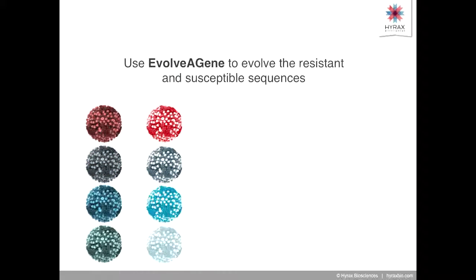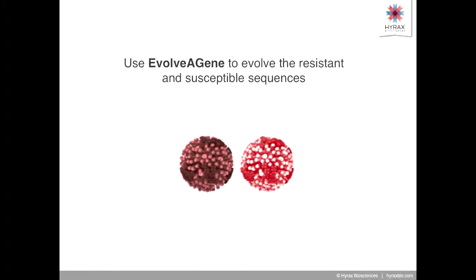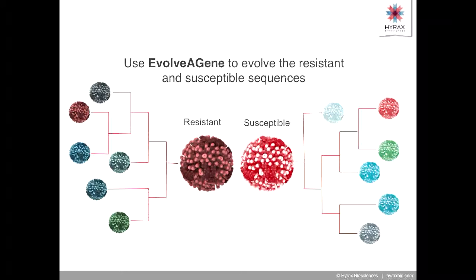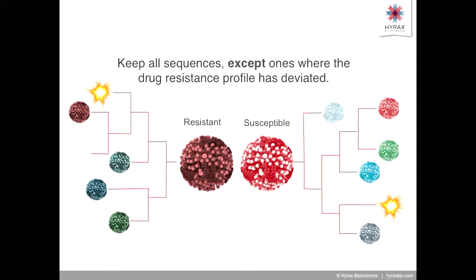We're going to use the tool EvolveAGene to evolve the resistant and susceptible sequences. This looks like taking those two sequences for each pair and building a tree of children of those sequences. But there's a catch. EvolveAGene does this for us, but it doesn't care about the drug resistance profile of the sequences it makes. So we need to go in with BioPython ourselves and find the sequences where we no longer have the clear answer of this one is this kind of resistant and this one is susceptible, and wholesale remove those sequences. We want all the messiness of life, but we want to keep our known result.